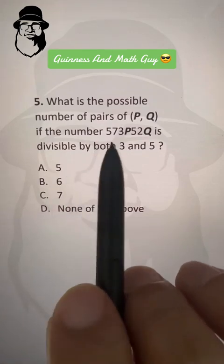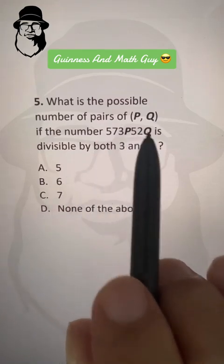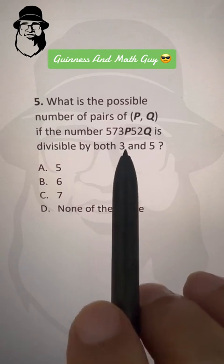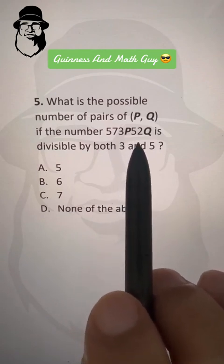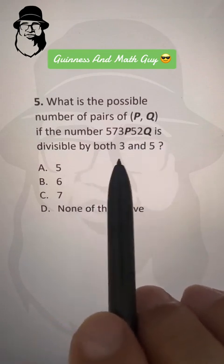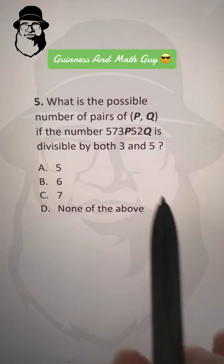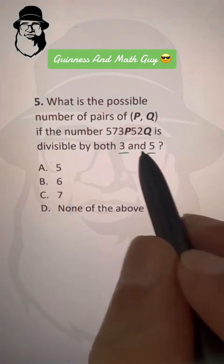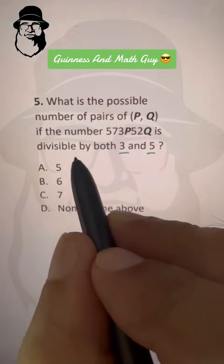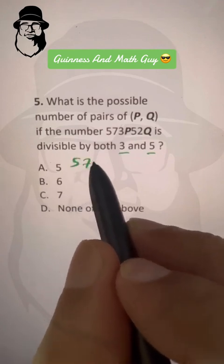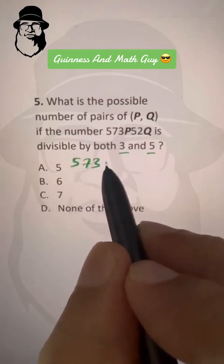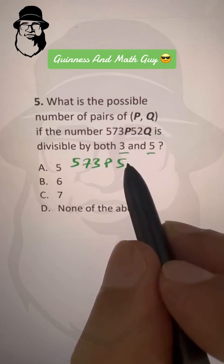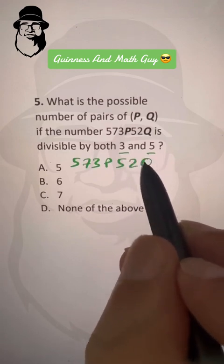What is the possible number of pairs of p comma q if the number 5 7 3 p 5 2 q is divisible by both 3 and 5? Let's write this number first: 5 7 3 p 5 2 q.